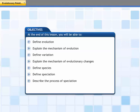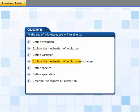you will be able to define evolution, explain the mechanism of evolution, define variation, explain the mechanism of evolutionary changes, define species, define speciation, and describe the process of speciation.